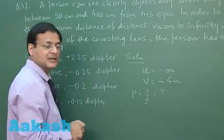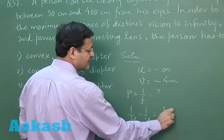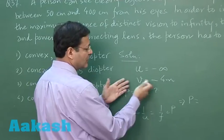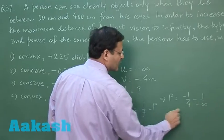So you will use the equation 1/v - 1/u = 1/f, that is power. So power is nothing but 1/v - 1/u. Now what is 1/v? This is -1/4, and -1/∞.